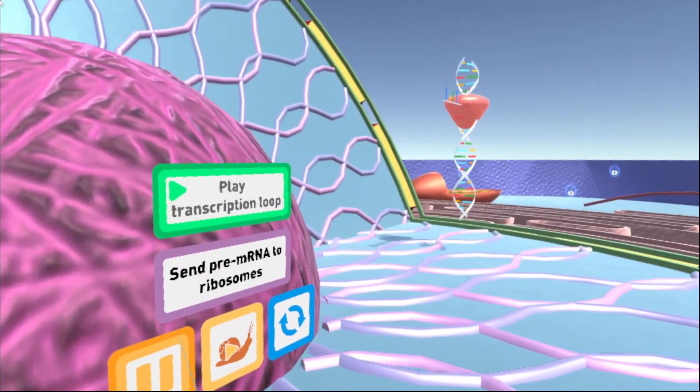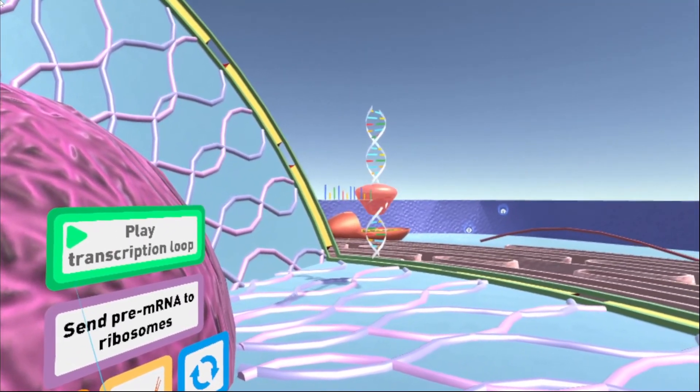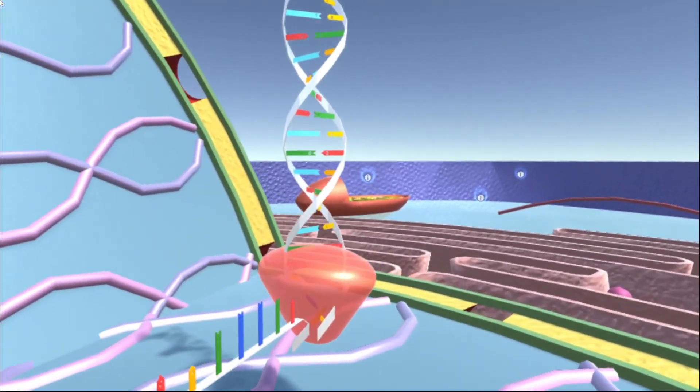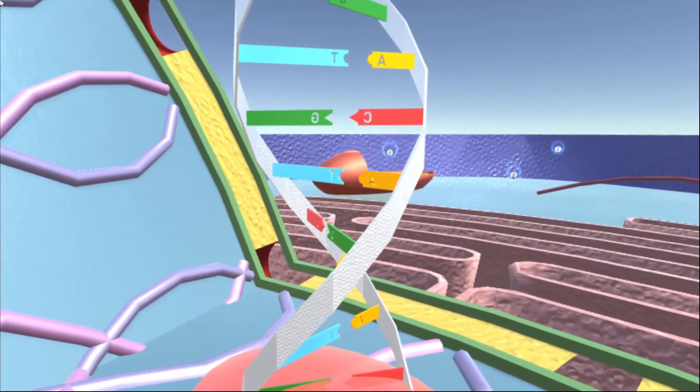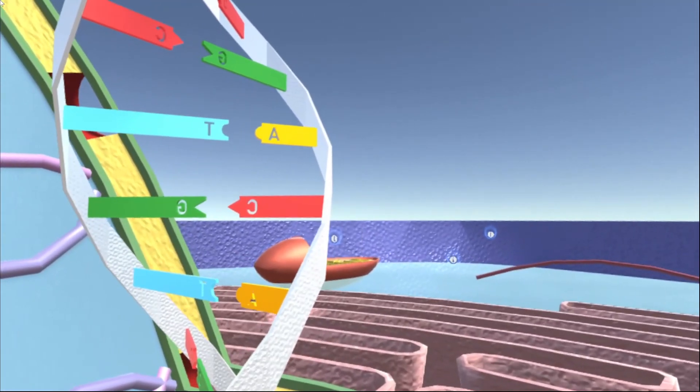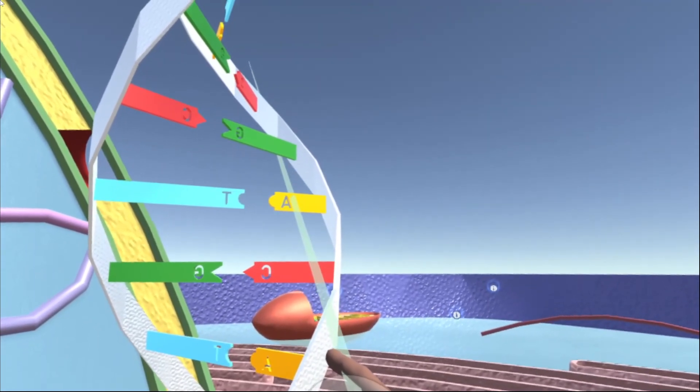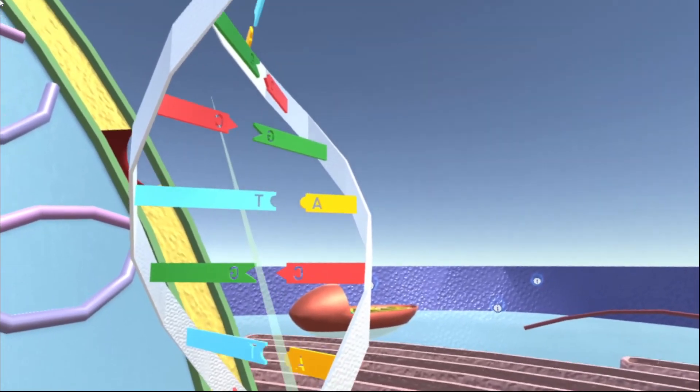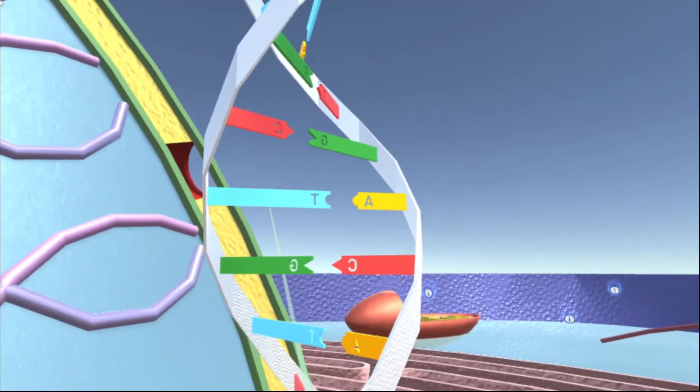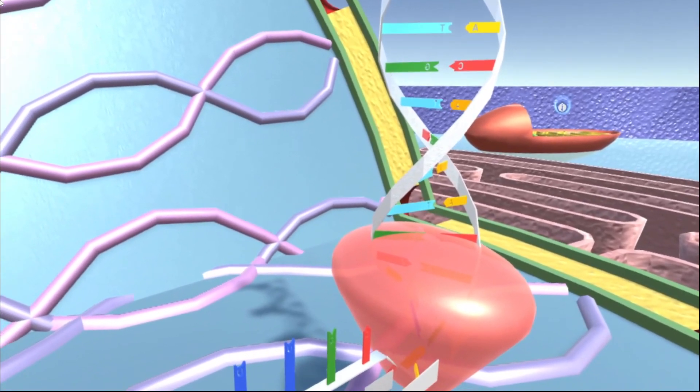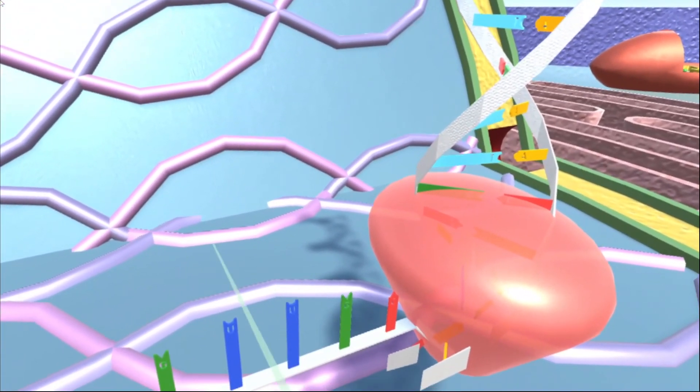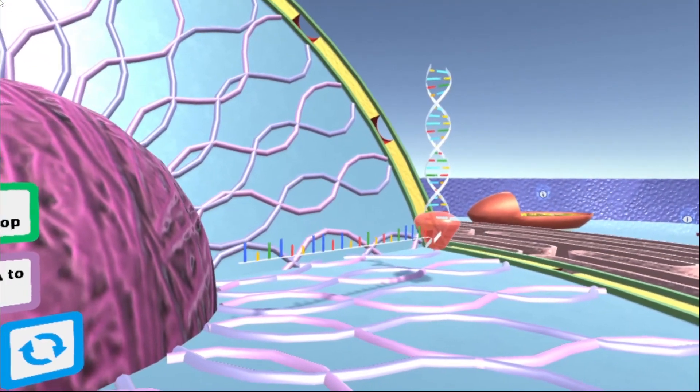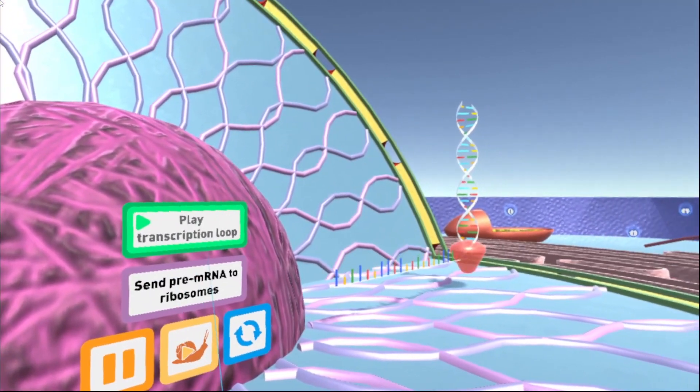You'll see that our strand of DNA actually starts to unzip and get transcribed into a strand of pre-mRNA. So back over here at the buttons, there are a few more things that I can do. I can pause this at any point and we can go over and take a closer look. You can see that all of our base pairs are labeled and we can see that the A pairs with the T, the G pairs with the C, all the way up and down our double helix here. And of course because this is RNA, our T's turn into U's right here.